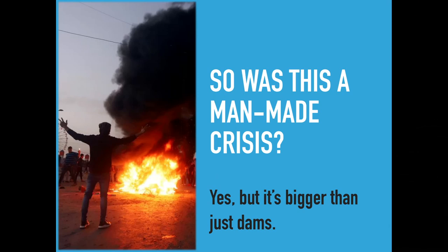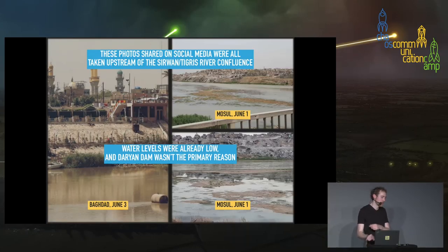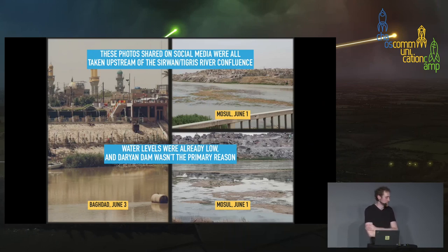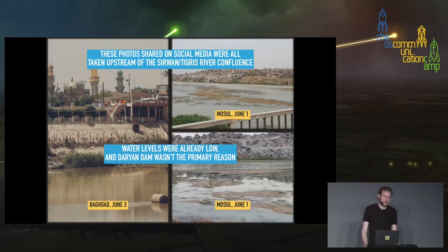Based on this, could we say the entire crisis was caused by these dams being shut off? Yes, it is man-made, but it's bigger than just these dams. Here are images taken from social media showing different sections of the Tigris River in early June — importantly, all taken in areas north of the confluence of the Suwan and Tigris rivers, so if the water was lower from the Iranian dam it should not affect the water level in these pictures. However, the water level is all very low. From this we can say the amount of water coming down the river was already low, and even if this dam were shut off, the dam wasn't the primary cause of this particular crisis. But what was?